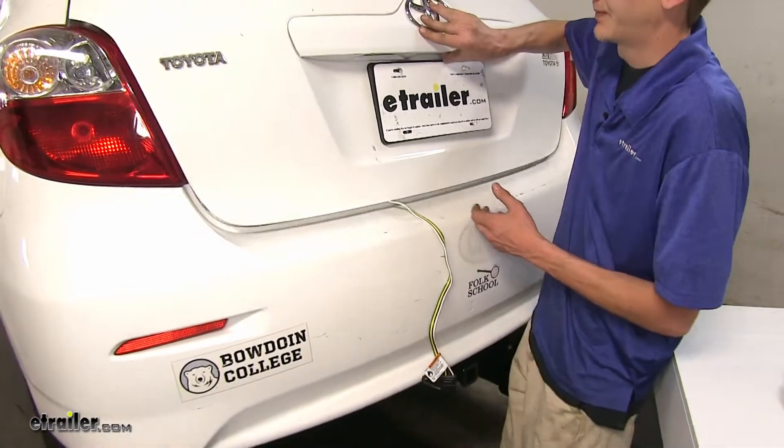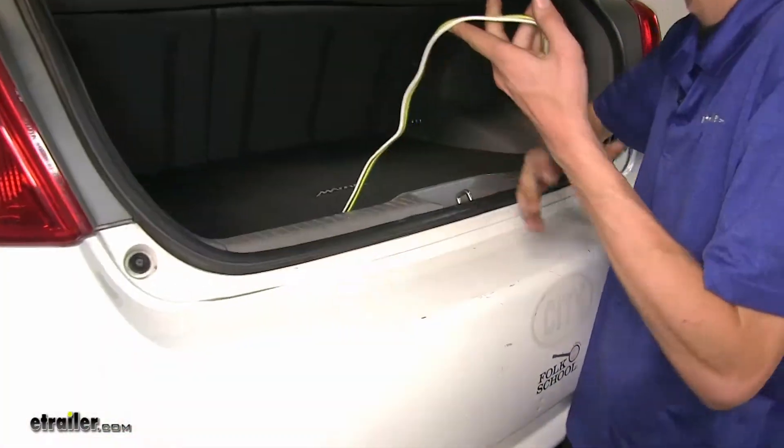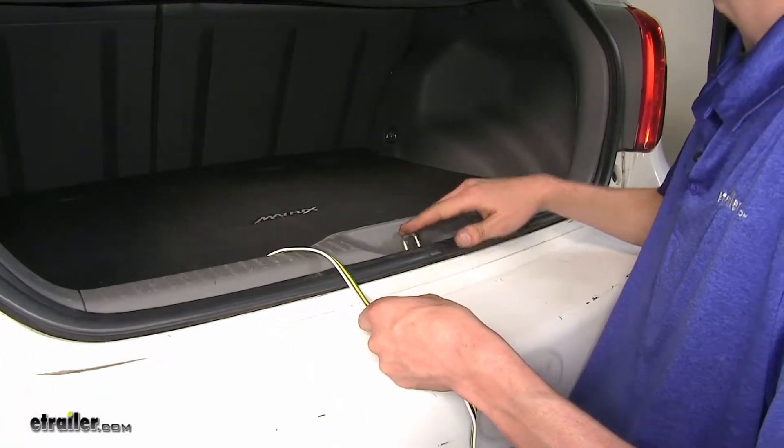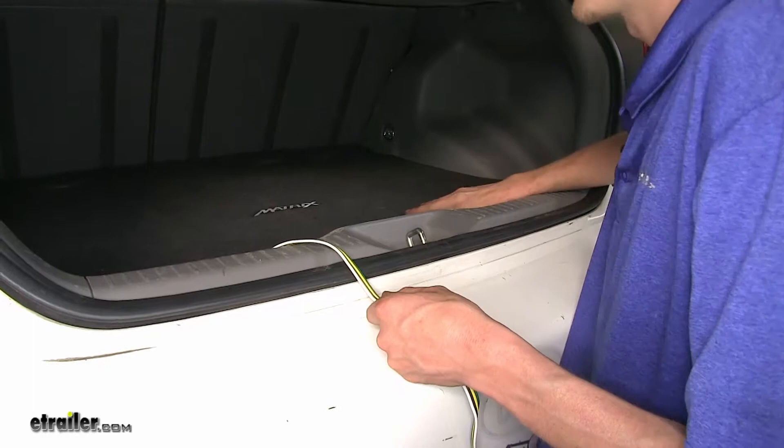So if we open up our hatch, you can see how the wiring works when you're towing. You just drape it to the side here of your latch and close your hatch on down. When it's not in use...